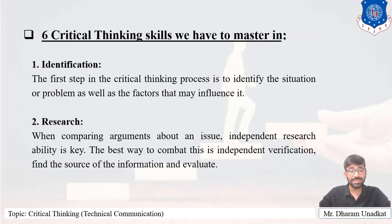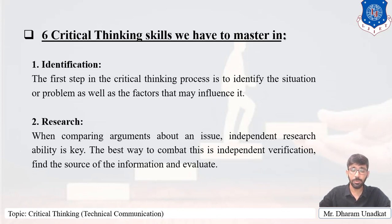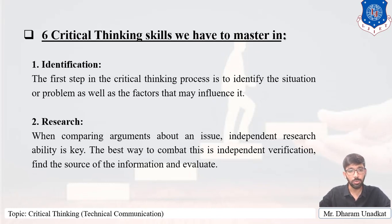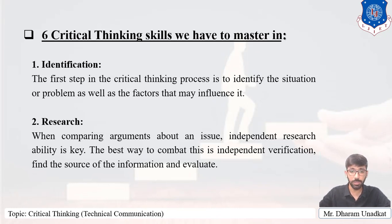Now let's look at the six critical thinking skills we need to master. The first is identification. The first step in the critical thinking process is to identify the situation or problem, as well as the factors that may influence it. Once you have a clear picture of the situation and the people, groups, or factors involved, you can begin to dig deeper into questions and potential solutions.